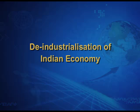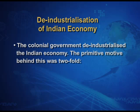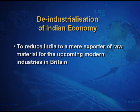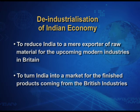The state of Indian industries can be explained with the following points. First, de-industrialization of the Indian economy — meaning no industrialization. The colonial government de-industrialized the Indian economy, and the motive behind this was twofold. First, to reduce India into a mere exporter of raw materials for the upcoming modern industries in Britain. And secondly, to turn India into a sprawling market for the finished goods coming from British industries.